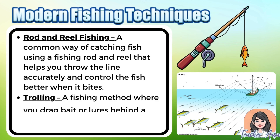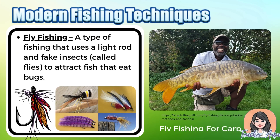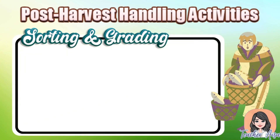Modern fishing techniques include rod and reel fishing — a popular method using a fishing rod and reel to cast the line accurately and control the fish when it bites. Trolling is a method where baited lines or lures are dragged behind a slowly moving boat, commonly used in deep or open waters to attract active fish like tuna, mackerel, and marlin. Fly fishing uses a lightweight rod and artificial insects called flies to attract fish that feed on bugs; the angler casts the fly onto the water's surface to imitate real insects, often used in freshwater rivers and streams to catch trout and salmon.